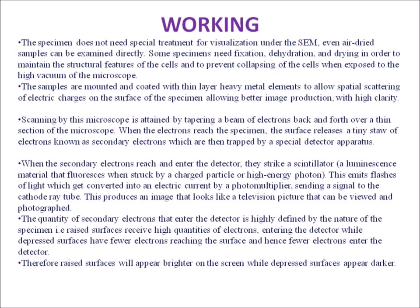This slide explains the working of the scanning electron microscope. The specimen does not need special treatment for visualization under the SEM — even air-dried samples can be examined directly. However, for histological and microorganism specimens, fixation, dehydration, and drying are needed in order to maintain structural features of the cell and to prevent collapsing of the cell when exposed to the high vacuum of the microscope. The samples are then mounted and coated with a thin layer of heavy metal element to allow spatial scattering of electric charges on the surface of the specimen, allowing better image clarity.